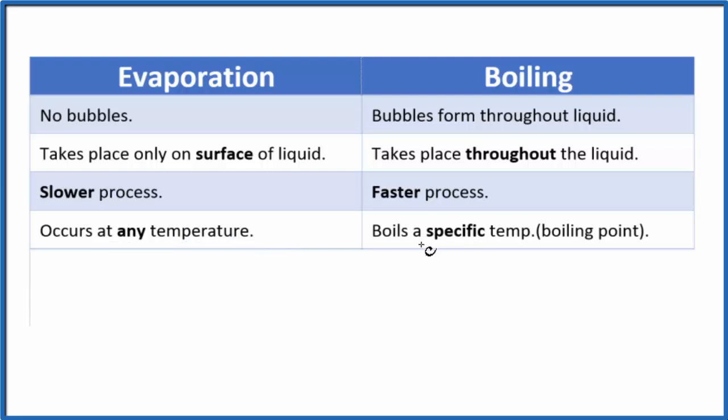For boiling, there's a very specific temperature, and we call that the boiling point. Water, for instance, at standard pressure will boil at a hundred degrees Celsius. When we hit a hundred degrees Celsius at standard pressure, that's when water starts boiling. Something like ethanol will boil at a lower temperature: 78.4 degrees Celsius, that's when it starts boiling.